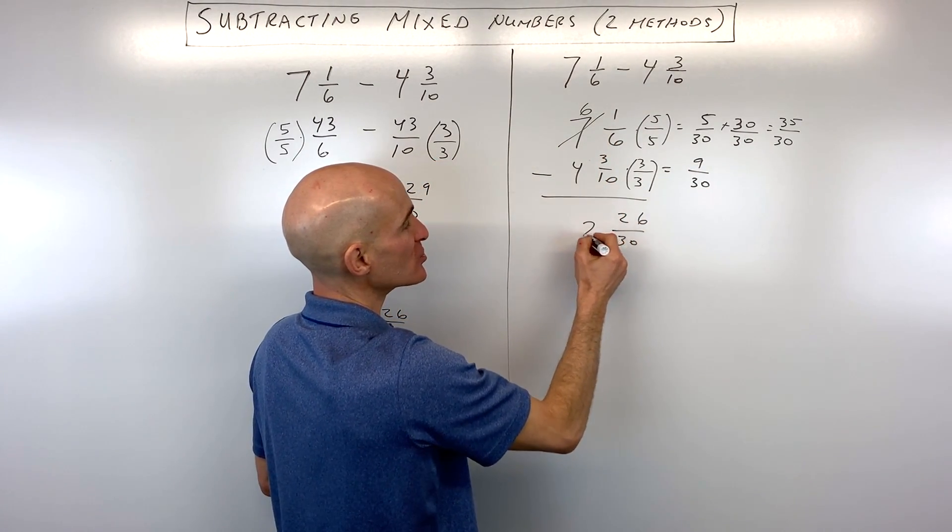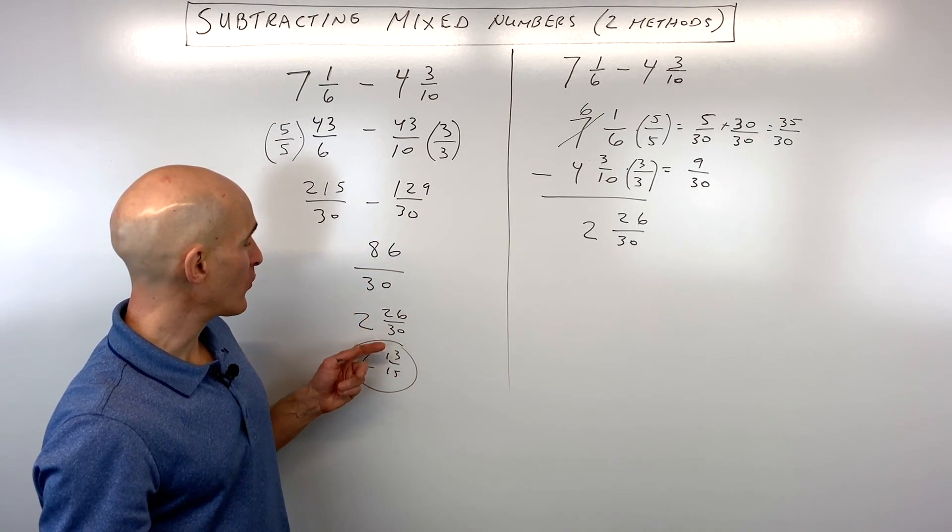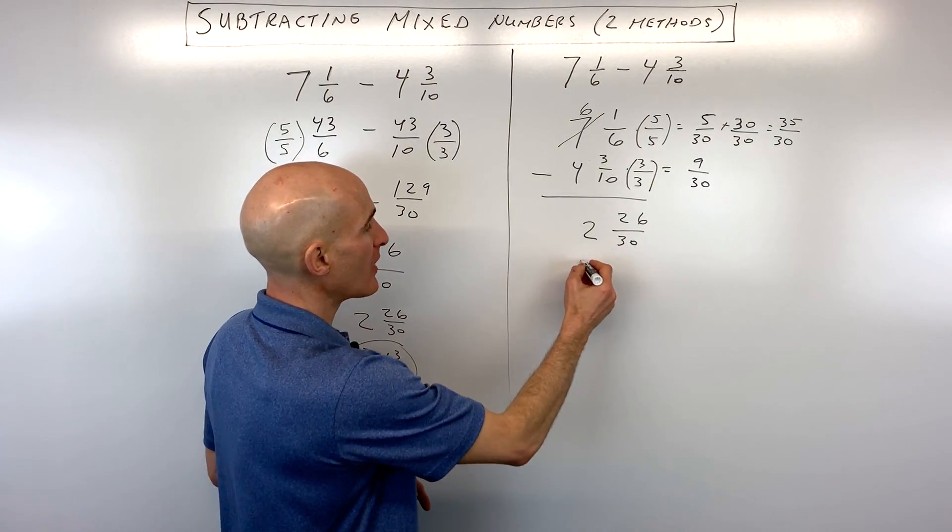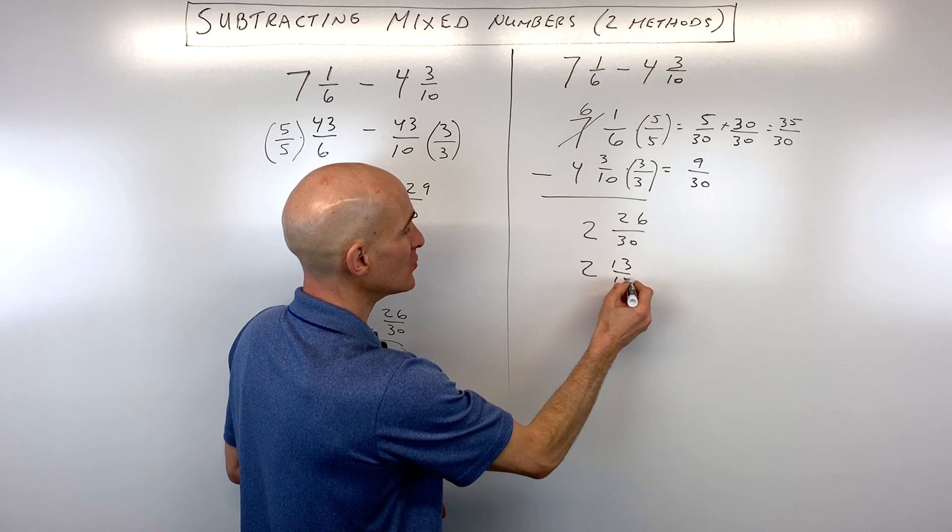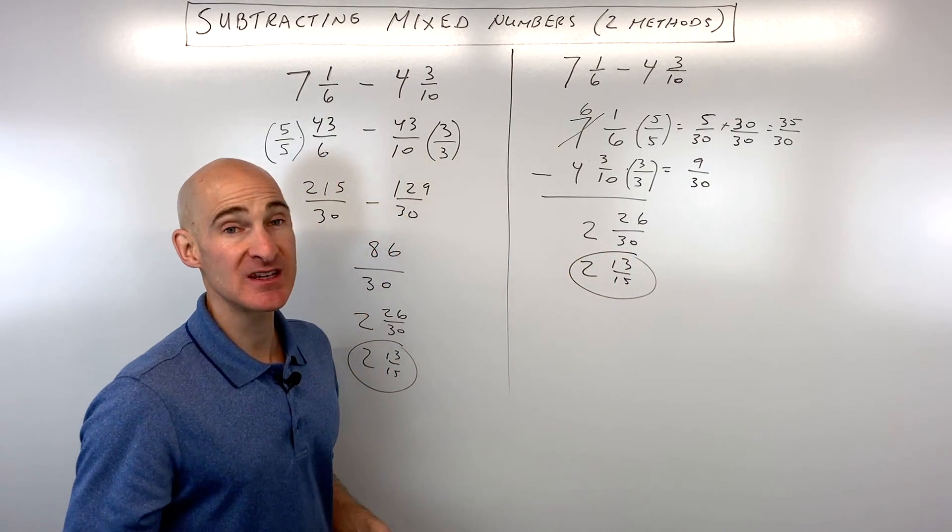And then 6 minus 4 is just 2. So you can see we're back to where we were right here, 2 and 26 thirtieths. All we have to do is reduce. That comes out to 2 and 13 fifteenths. And you've got it.